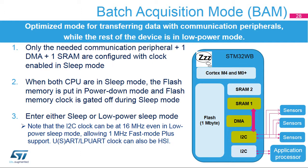Batch acquisition mode is an optimized mode for transferring data. Only the needed communication peripheral plus DMA plus SRAM1 or SRAM2 are configured with clock enable in sleep mode. Flash memory is put in power-down mode and the flash clock is gated off during sleep mode. The I2C clock can be at 16 MHz even in low-power sleep mode, allowing support for 1 MHz fast mode plus. The USART and LPUART clocks can also be based on the high-speed internal oscillator. Typical applications are sensor hubs.